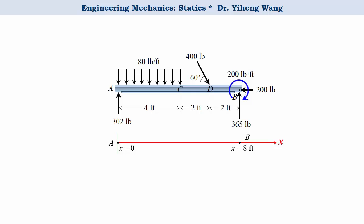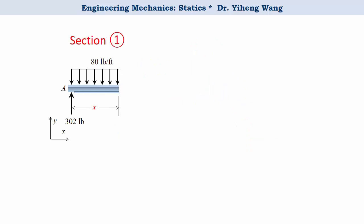Next we want to section the member. Looking at the loadings, you can tell they change, so intuitively we cannot use a single shear force or bending moment function for the entire member. Since points C and D are where changes happen, we cut the member three times: section 1 between A and C, section 2 between C and D, and section 3 between D and B. Every time we section the member, we take the entire left segment for analysis, so the length of the segment is x as defined by our x-axis.